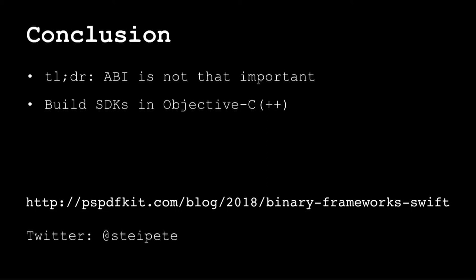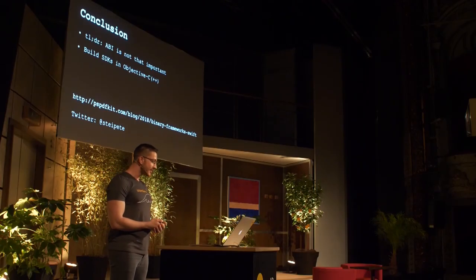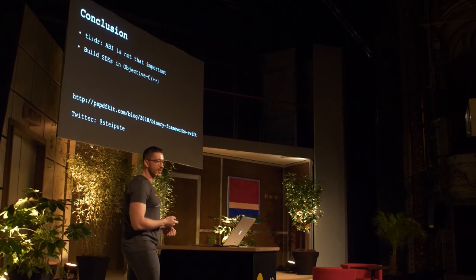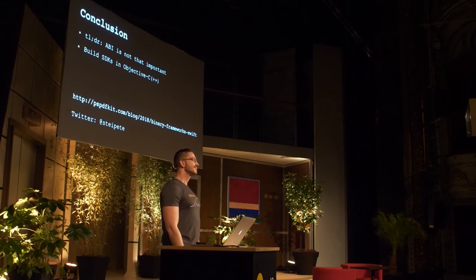To summarize, ABI stability is likely not as big a thing as you might think. And if you build frameworks like me, write them in Objective-C — we actually use a little bit of Objective-C++ to fill in some gaps of the language. If you want to learn more, there is a blog post coming up. Thanks for listening.